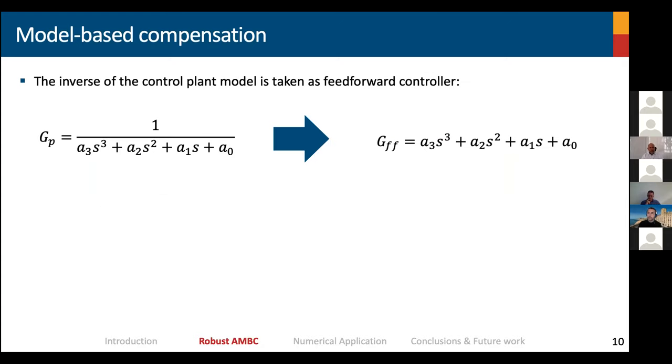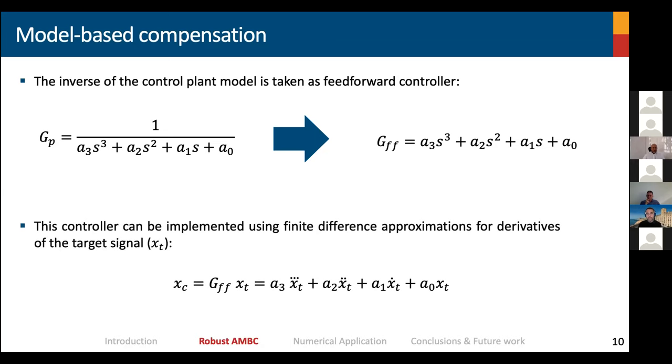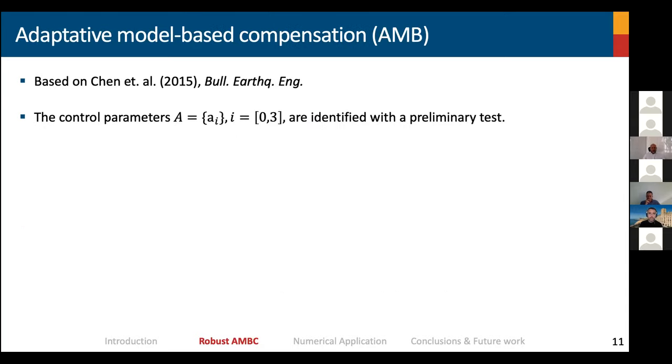The model-based compensation for RTHS is based on a feedforward controller that is the inverse of the plan that we want to synchronize. The idea is that if we have this feedforward controller connected to the control plan in series, we will get an open loop system with unity gain and zero phase. The controller can be implemented using finite differences to approximate the higher order derivatives of the target signal, and this is a typical controller that we will develop for RTHS using the model-based compensation approach. The question is, how do we get these parameters a_i from zero to three?